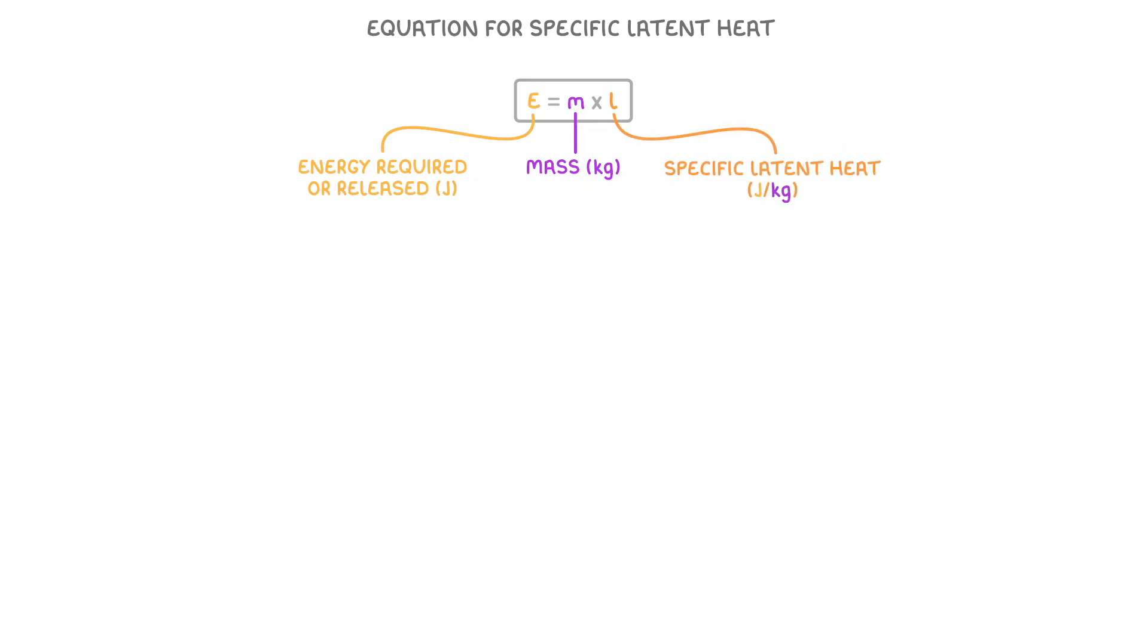The last thing we need to look at is the equation for specific latent heat, which says that the energy that's required, or released, is equal to the mass of the substance times the specific latent heat. You can also use this formula triangle if that's easier.